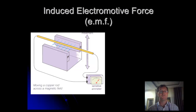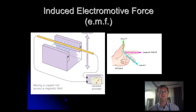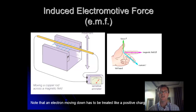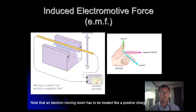This is the idea of induced electromagnetic force. We're going to look at a simple example: a copper rod being moved up and down through a magnetic field, just like the setup shown in the picture. We're going to use Fleming's left-hand rule — thumb as the force, first finger as the magnetic field, second finger as the current. One important point: in this situation, the electron moving down has to be treated like a positive charge moving up. The movement of the electron is caused by moving the wire up and down, and the opposite direction of the electron's movement gives the direction of conventional current.